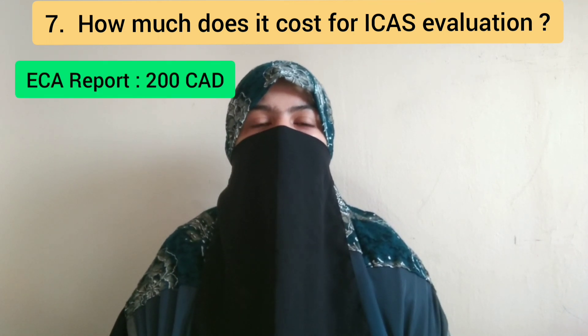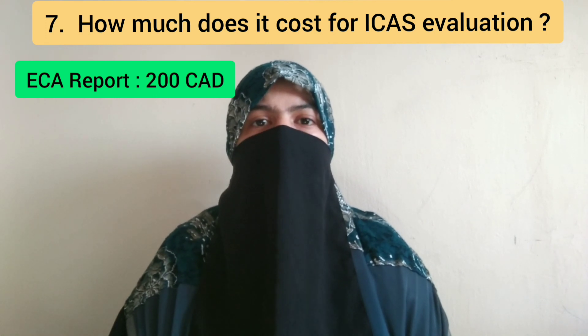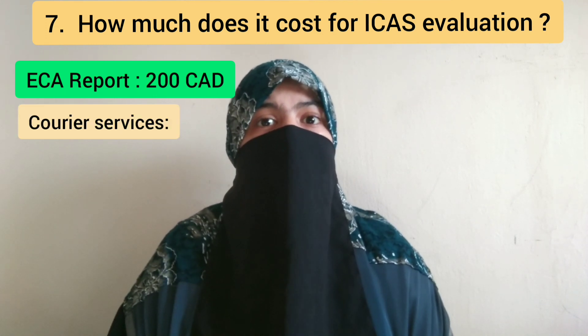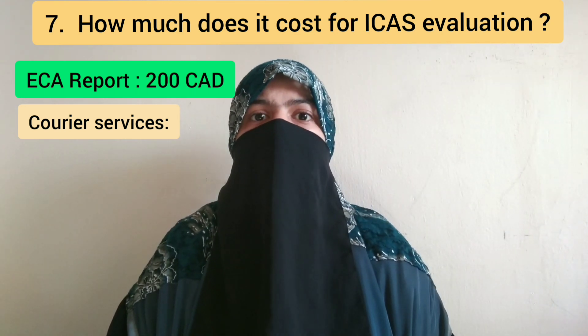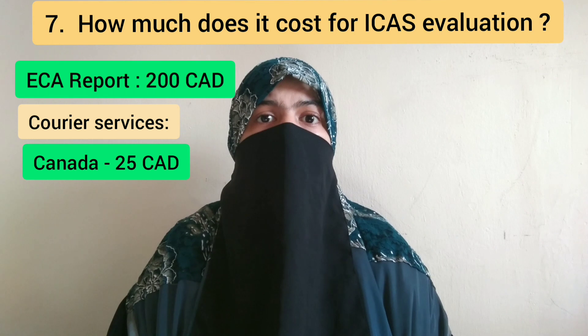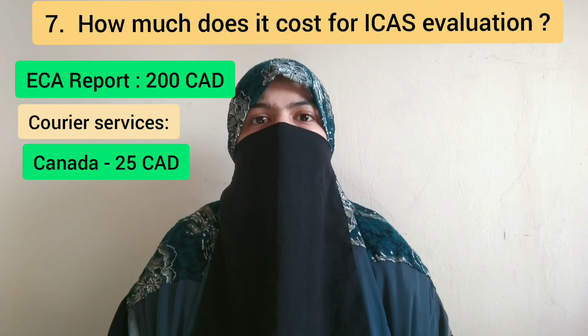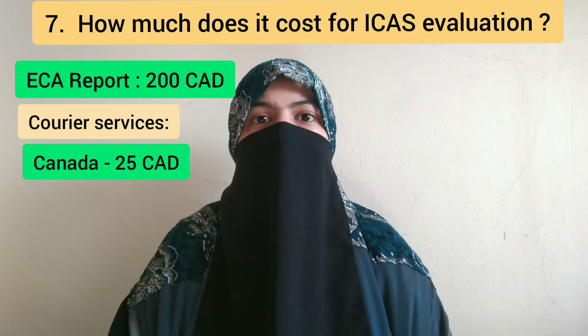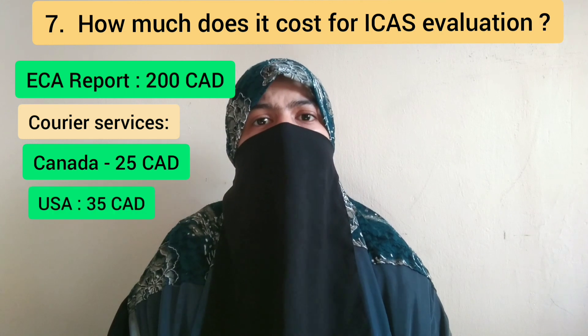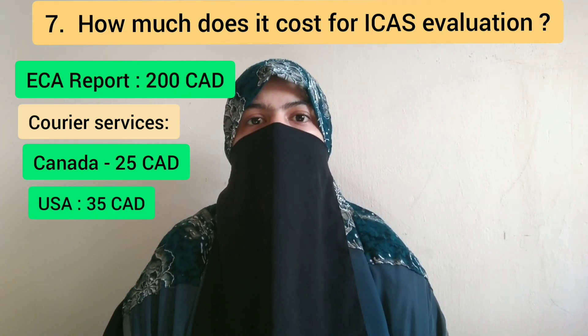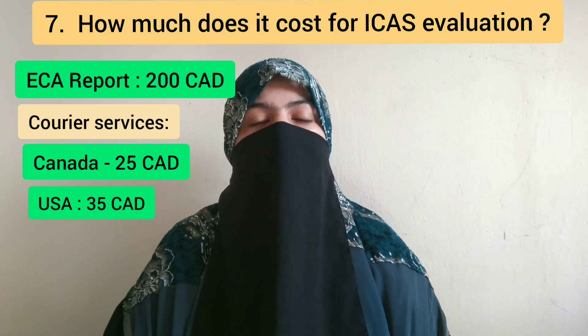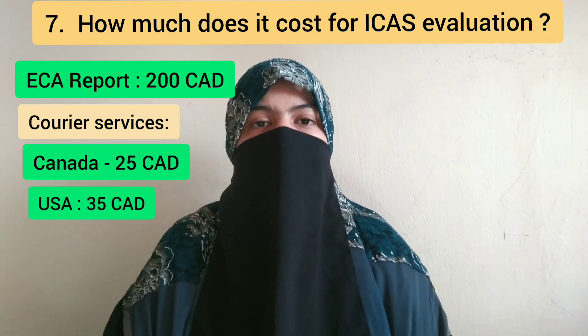The next question is: how much does it cost for ICAS evaluation? For your ECA report you need to pay 200 Canadian dollars. For courier services, there are three options: if a relative is in Canada it's 25 Canadian dollars; if a relative is in the USA it's 35 Canadian dollars; or if you want to receive your report in your home country it's 85 Canadian dollars. So the total will be 200 Canadian dollars plus the service charges.